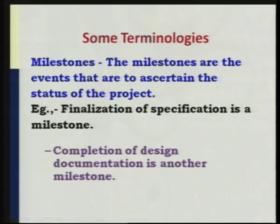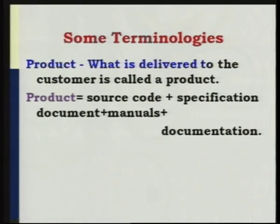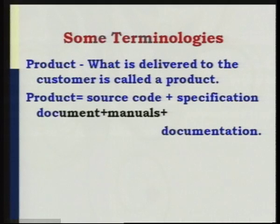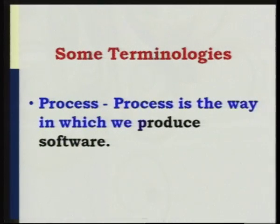The third terminology is product — what is delivered to the customer. A product is source code plus specification plus documents plus manuals; these four concepts totally constitute the product. One more terminology is process, which I have described as manufacturing a particular product. Process is defined as the way in which we produce the software. Just as in manufacturing a physical product every stage from raw materials to the finalized product is called a process, the same applies to software.